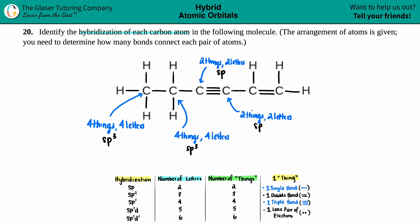Now let's do this carbon. It's got one single bond - that's one thing, another single bond - two things, and a double bond - three things. Three things, three letters: sp2.